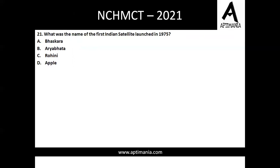Question twenty-one: what was the name of the first Indian satellite launched in 1975? This is a common question — the answer is option B, that is Aryabhata. Question twenty-two: the only natural satellite of earth — the easiest question of this paper — option A, Moon.